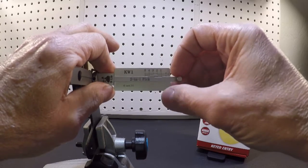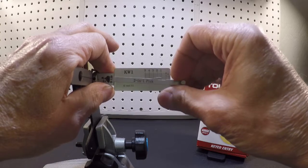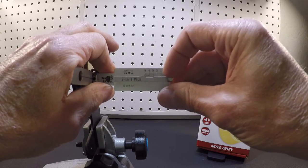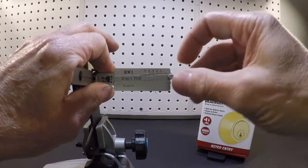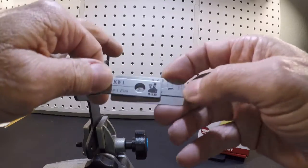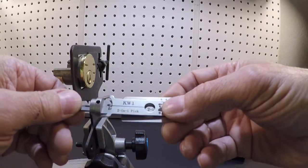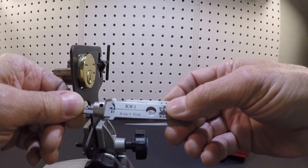So if you notice, once you get a couple of the positions picked, the number four cut is already picked for you, so you really don't have to do it. So that's it, the KW1 2-in-1 original Lishi tool, great product.